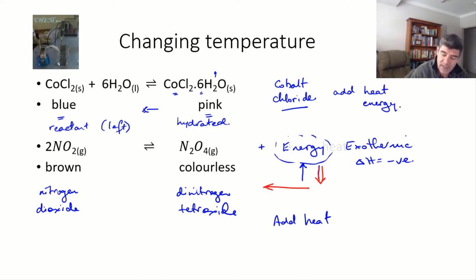If we shift to the left, we're going to produce more nitrogen dioxide, and our gas mixture will become slightly browner or darker in color.